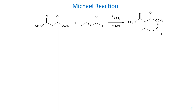Hello everyone, welcome back to my organic chemistry mini lecture. Today our topic will be the Michael reaction and the Robinson annulation. The Michael reaction is the reaction between an enolate and alpha-beta unsaturated carbonyl compounds.